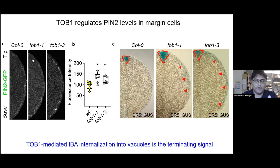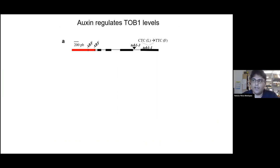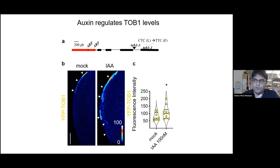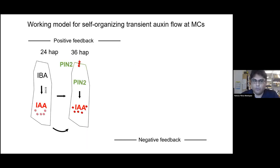So we think the terminating signal is the internalization of IBA mediated by transporter TOP1, localized at the tonoplast. To further understand TOP1 expression, we analyzed the promoter of that gene and detected auxin response elements. We discovered that adding exogenous auxin at low concentration increases the level of TOP1, and with that we circled back to the self-organizing circuit of this system.